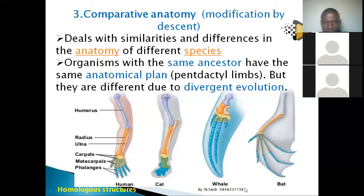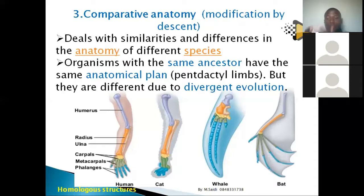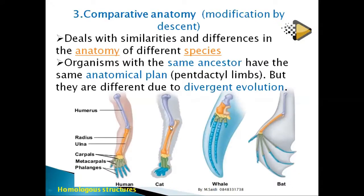This shows that evolution took place. Basically, all vertebrates share a common ancestor but went to different environments and modified accordingly. If organisms have almost the same structure, it means they share the same environment. If their structures differ, they adapted to different environments.